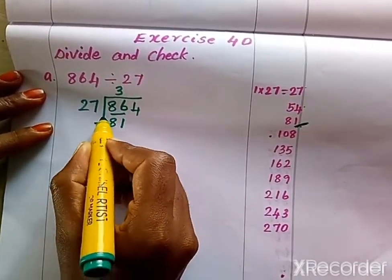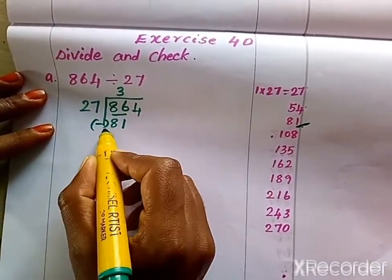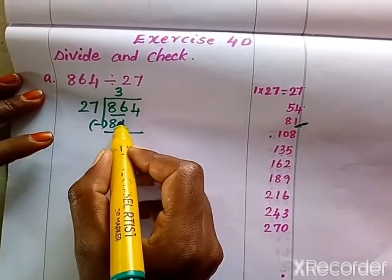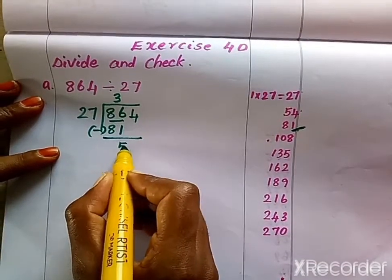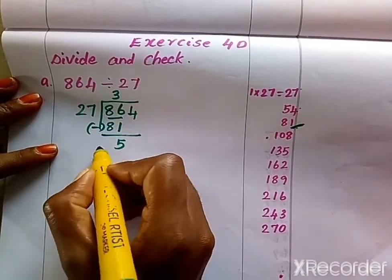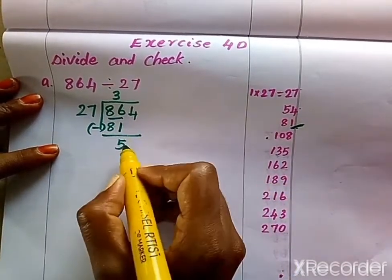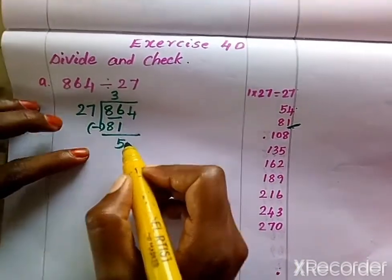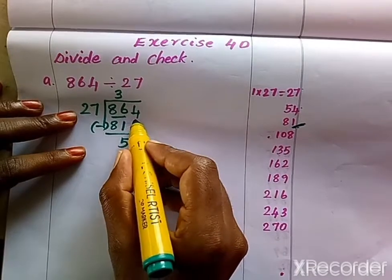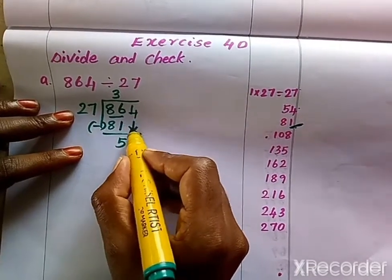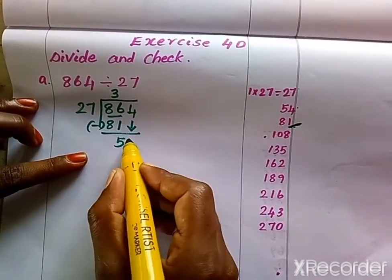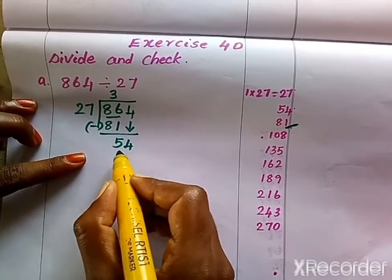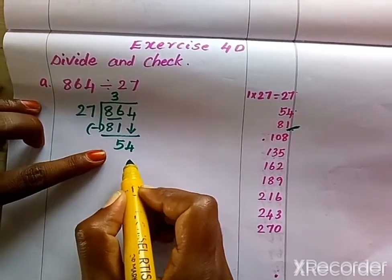Next we subtract. 6 minus 1 is 5, and 8 minus 8 is 0. So we get 5. Since 5 is smaller than 27, we bring the next digit down — that is 4 — making it 54.